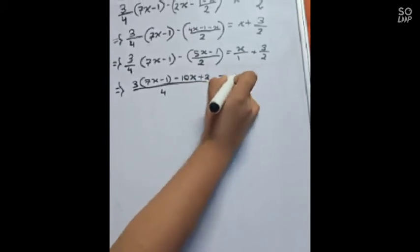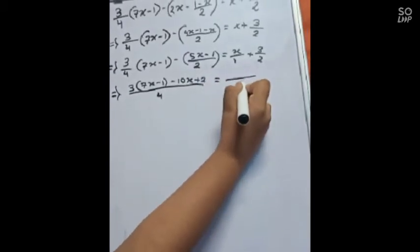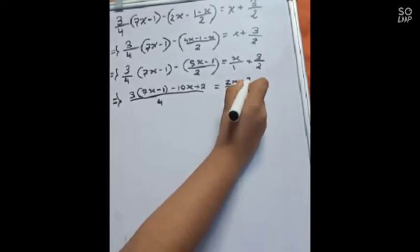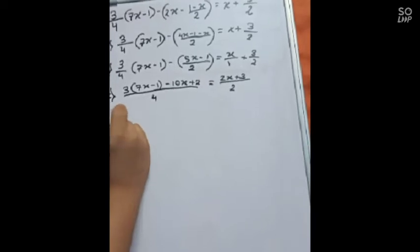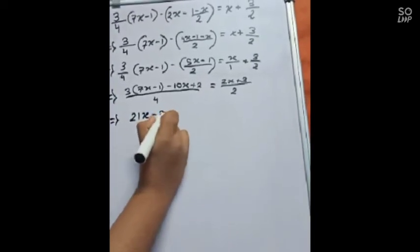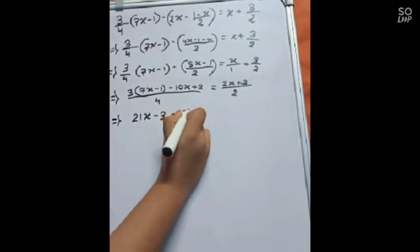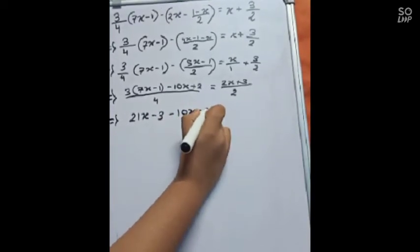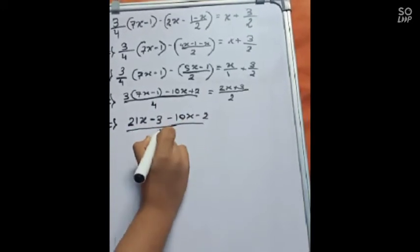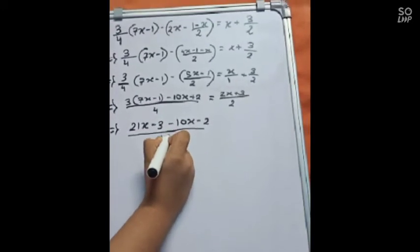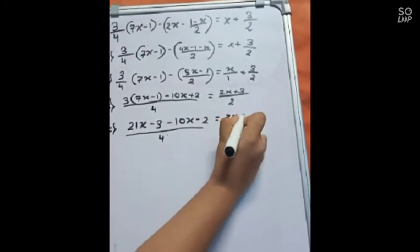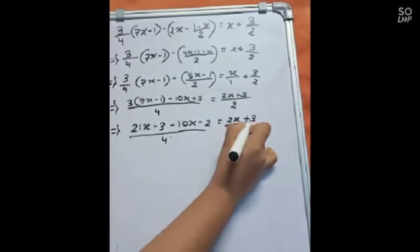Equals to minus of this side. It will become 2 by 2x plus 3. Equals to it will become (21x-3-10x-2)/4. Equals to (2x+3)/2.